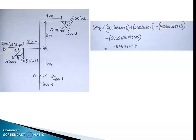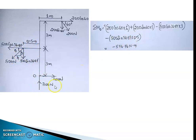Minus 500 cos 36.87 is a horizontal force with a vertical distance of 3 meters, and this force causes anti-clockwise movement about O, so it is negative. Then 500 sin 36.87 is a purely vertical force; the perpendicular horizontal distance between this point and O is 0.5 meters. It causes anti-clockwise movement about O, so it is also negative.